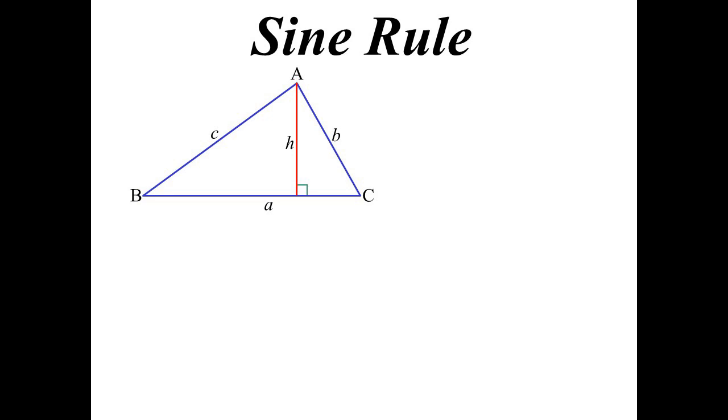Now in that right angle triangle I could say well h over c is the sine of B, so I now know that perpendicular height is c sine B.